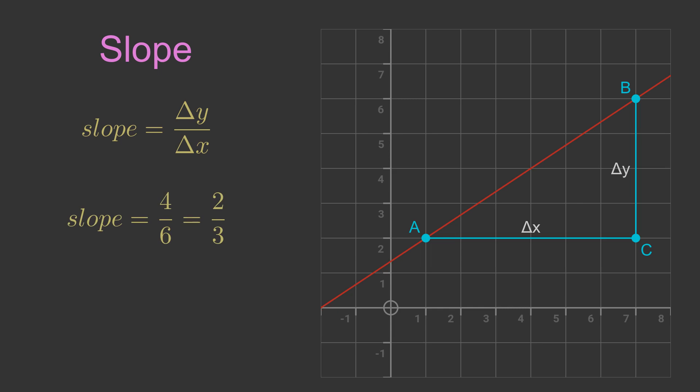The slope of a straight line is sometimes called its gradient. This means the same as slope. The slope represents the rate of change of Y with respect to X. This tells us how much Y changes when X increases by 1. In this example the slope is positive 2 thirds, so Y increases by 2 thirds when X increases by 1.